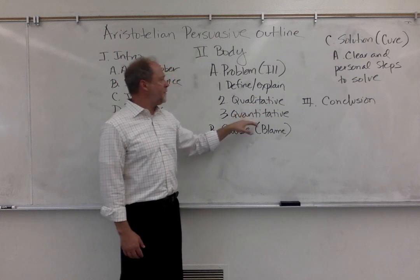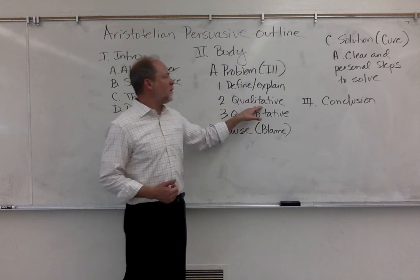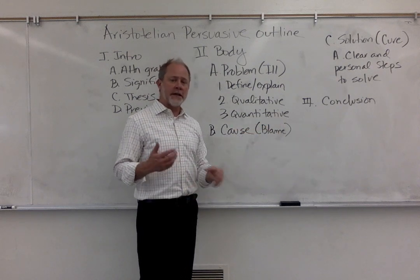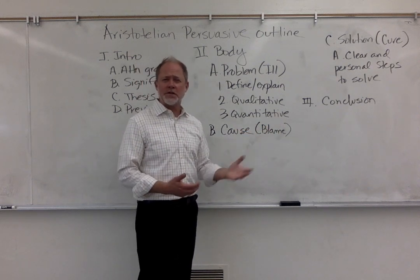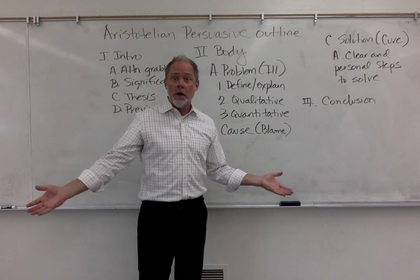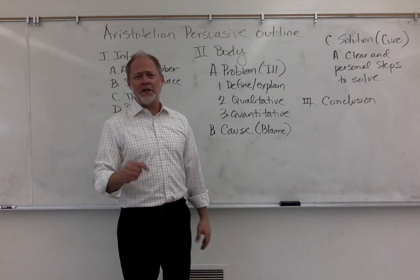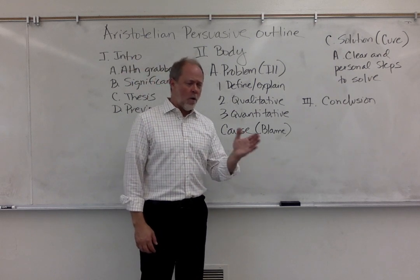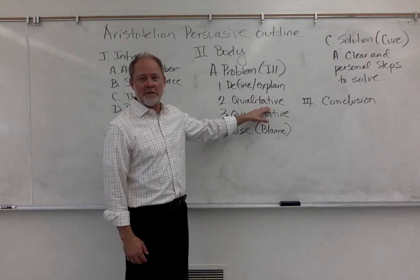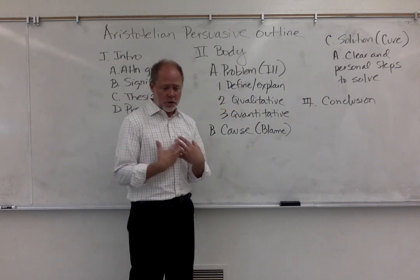You want to establish the problem both qualitatively and quantitatively — this ties into ethos, pathos, and logos. Qualitative means stories: tell us stories about people that have been affected by this problem. Quantitative means give us the numbers, the percentages. Years ago, I had a student who did a speech on escalator safety, and something like 70,000 people each year in the United States alone die or are injured on escalators. He told stories of kids that got injured, people that died, people who lost body parts on escalators.